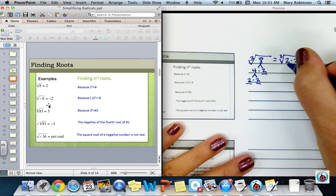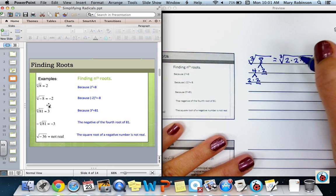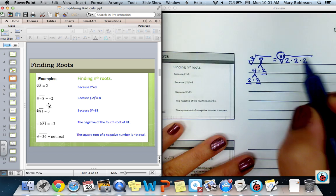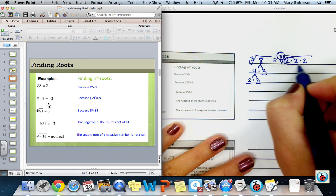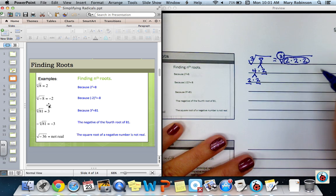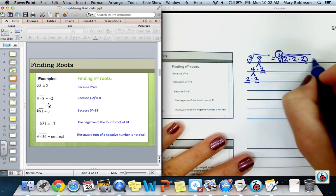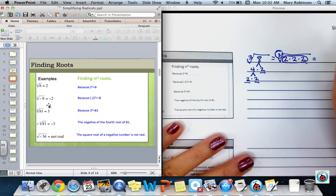Notice that 2 times 2 times 2 is equal to 8. Because my index is 3, I am looking for factors that can be grouped in a size of 3. Because I have 3 of them, I know that the cube root of 8 is equal to 2.